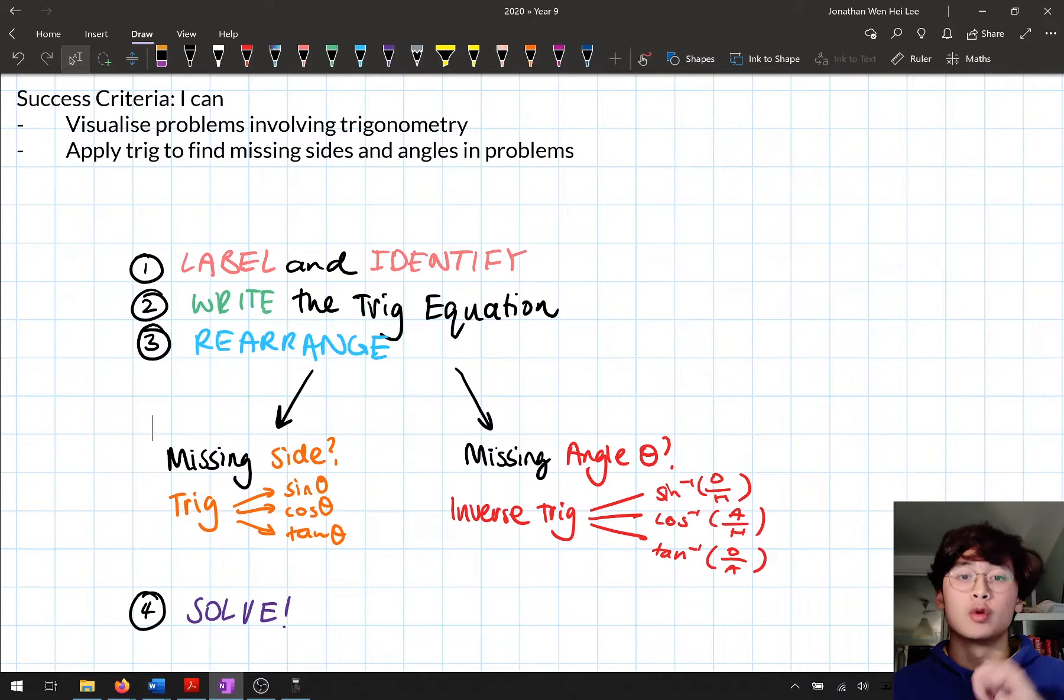Then in step two we wrote a trig equation. We wrote sine theta equals or sine angle equals a particular value, or cos equals some value. We wrote a trig equation based on the information from the question. Then in step three we rearranged the equation for what we were trying to solve for. When solving for missing sides we used trigonometry.